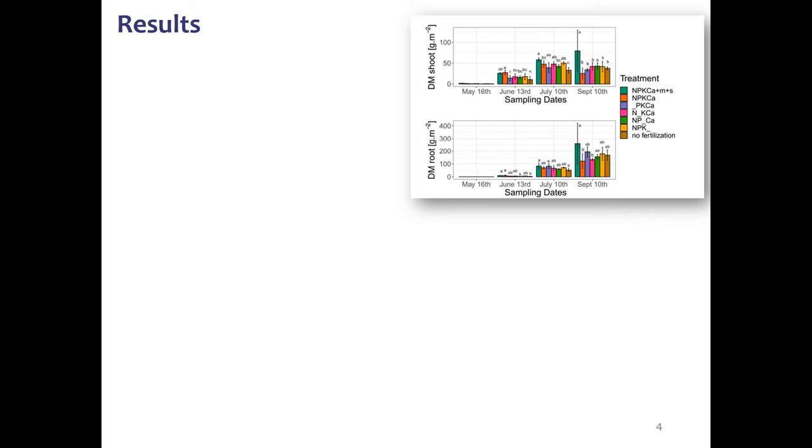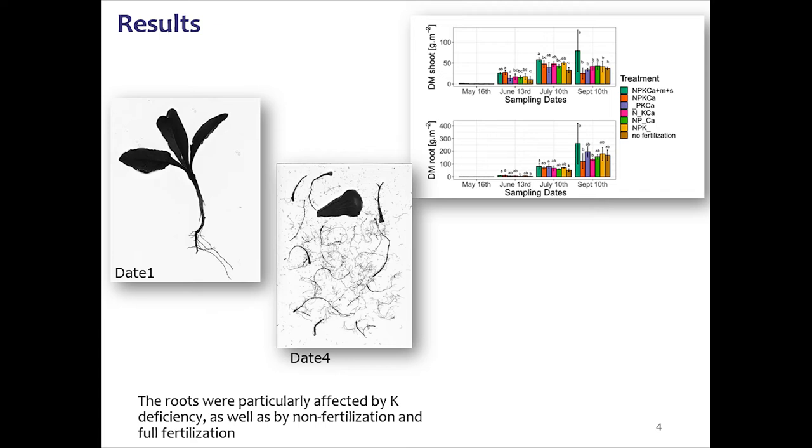The root dry matter weights increased from sampling date 1 to sampling date 4 for all treatments and thus did not decline from date 3 to 4, unlike the shoot rates.